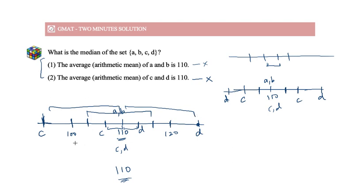In this case, if A is over here and B is over here, then the median will simply become the average of A and B, which we know is again 110 only. So it doesn't matter where A, B, C and D actually lie, the median will always be 110 because it will always be the average of either A and B or the average of C and D. So answer over here is C, that is both statements together are sufficient to get the median.